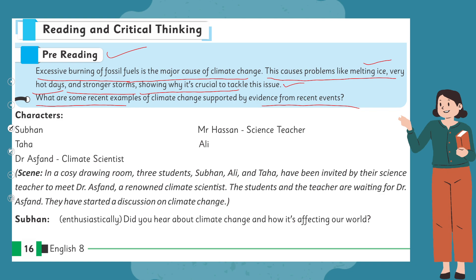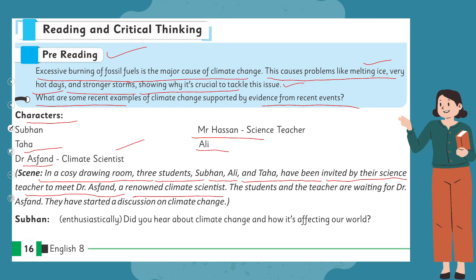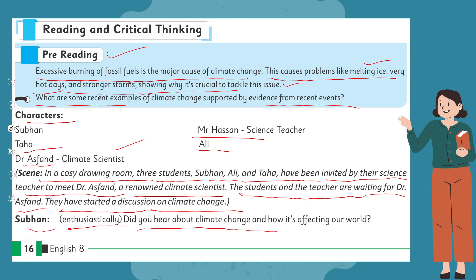We have our characters: Subhan, Taha, Mr. Hassan the science teacher, Ali, and Dr. Ashwan the climate scientist. Scene One: In a cozy drawing room, three students — Subhan, Ali, and Taha — have been invited by their science teacher to meet Dr. Ashwan, a renowned climate scientist. The students and the teacher are waiting for Dr. Ashwan and have started a discussion on climate change. Subhan enthusiastically asks: 'Did you hear about climate change and how it's affecting our world?'